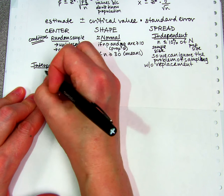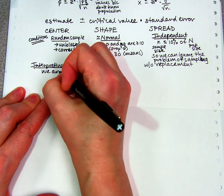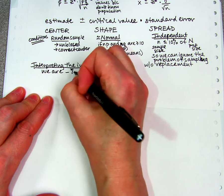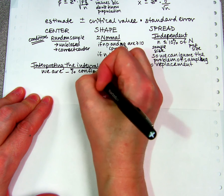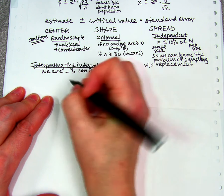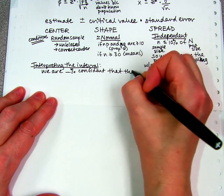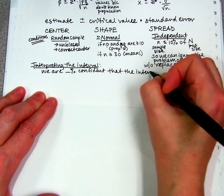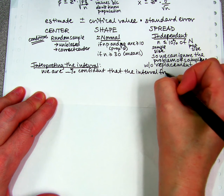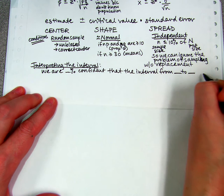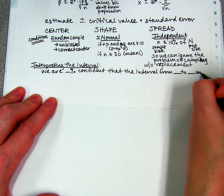You would say something like: we are whatever percent confident, usually 95%, that the interval from whatever your numbers are contains...